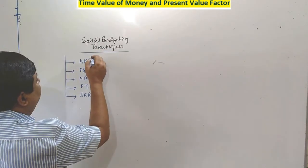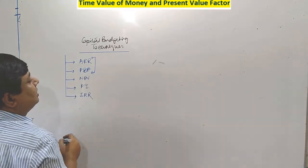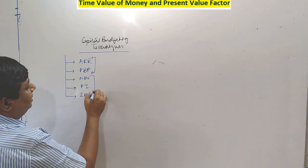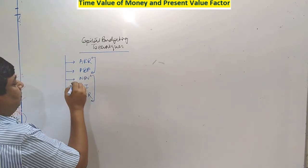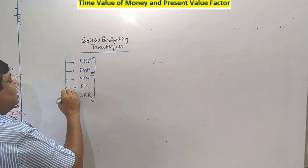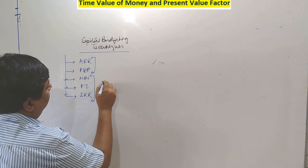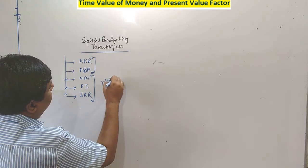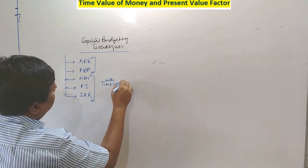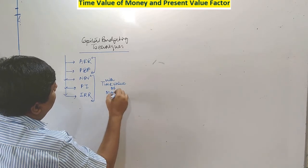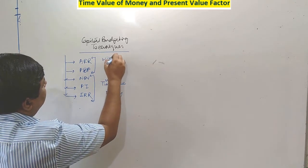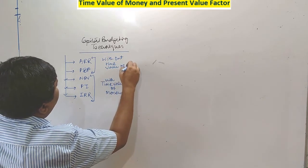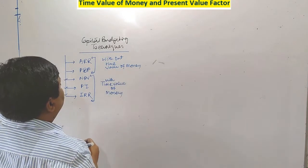Now ARR and PPP, which I have already discussed in my previous class — for ARR and PPP, we don't consider the time value of money. For the remaining three concepts — NPV, PI, and IRR — you have to consider time value of money. These two concepts are without time value of money, and those three are with time value of money.